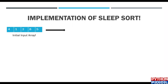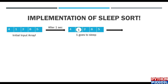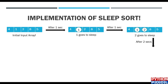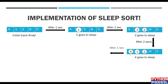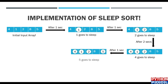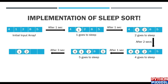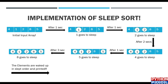Let's walk through the implementation step by step. The initial list was 4, 1, 2, 8, 5. After one second, one is made to sleep. After another second, two is made to sleep. After two seconds, four goes to sleep. After one more second, five goes to sleep — one, two, and four are already sleeping. After three more seconds, eight goes to sleep. Once all elements in the list are sleeping, they are woken up in sorted order and printed as the final sorted array.